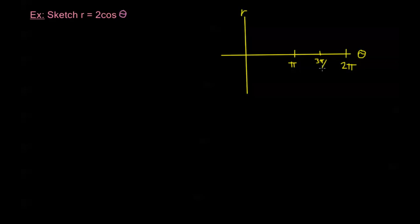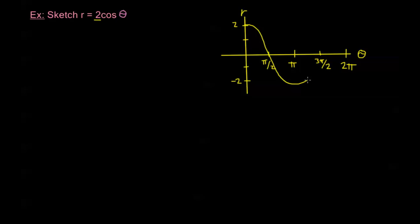Let's mark out the key points. The amplitude is 2, so I need to go up to 2 and down to negative 2. I'm treating this as a rectangular equation in the variables r and theta. The cosine starts at the top, hits 0 at pi over 2, bottoms out at pi, hits 0 again at 3 pi over 2, and peaks back out at 2 pi. We call this a reference graph because it gives us a form of reference.